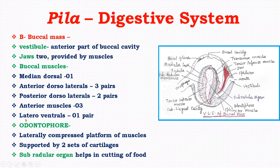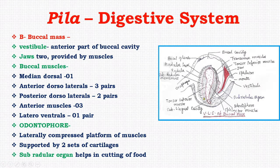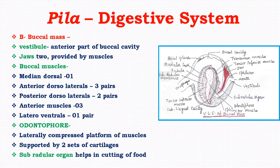Next is the odontophore, a structure present inside the buccal mass. It is a laterally compressed platform of muscles arising from the floor of the buccal cavity, supported by two sets of cartilages: paired triangular superior cartilages at the top, and paired S-shaped lateral cartilages.